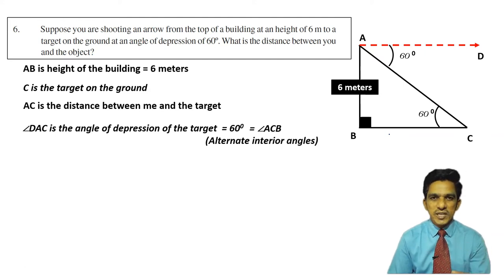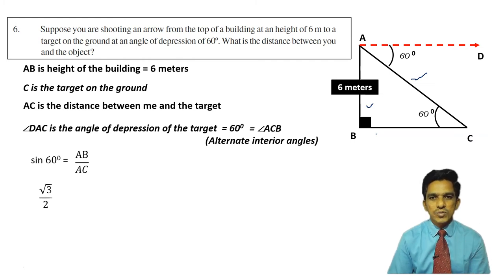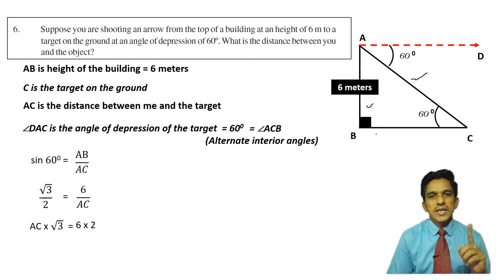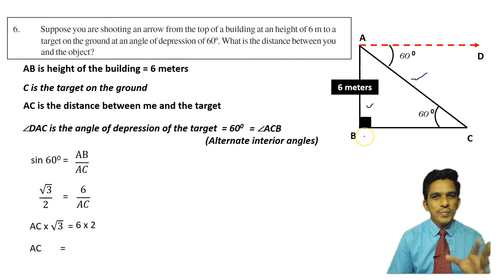Let us take sine 60 degrees. Sine is opposite by hypotenuse, that is AB by AC. We know that sine 60 degrees is equal to root 3 by 2. So root 3 by 2 is equal to 6 by AC. Cross multiply: AC into root 3 is equal to 6 into 2. That gives AC into root 3 equals 12. So AC is equal to 12 by root 3.